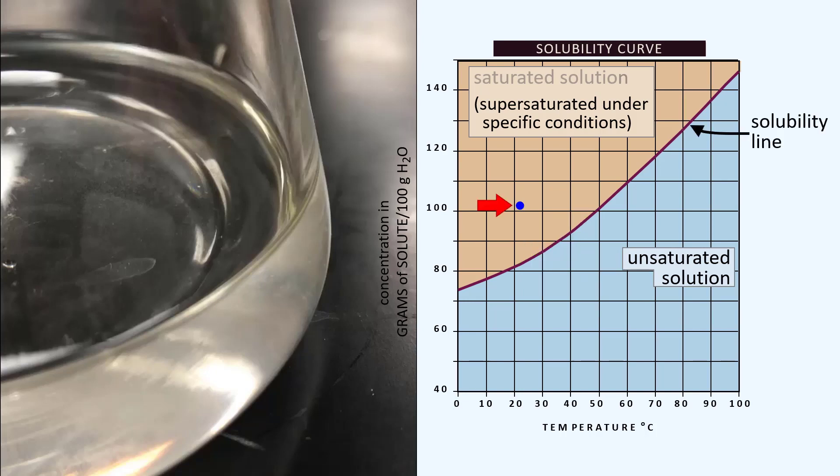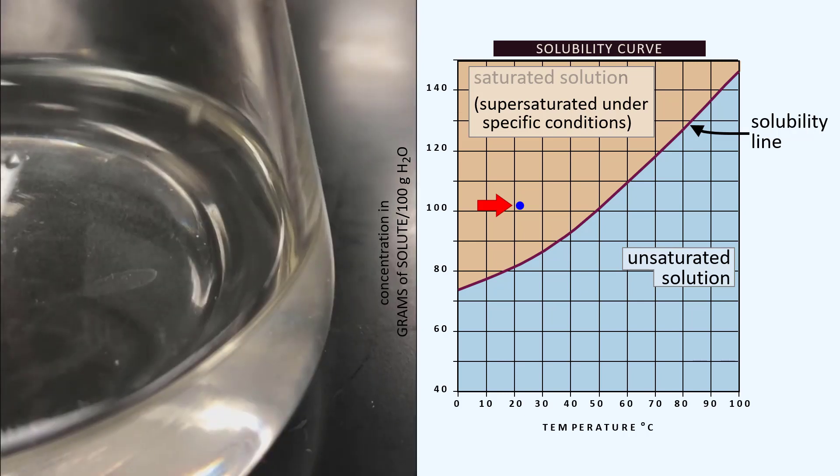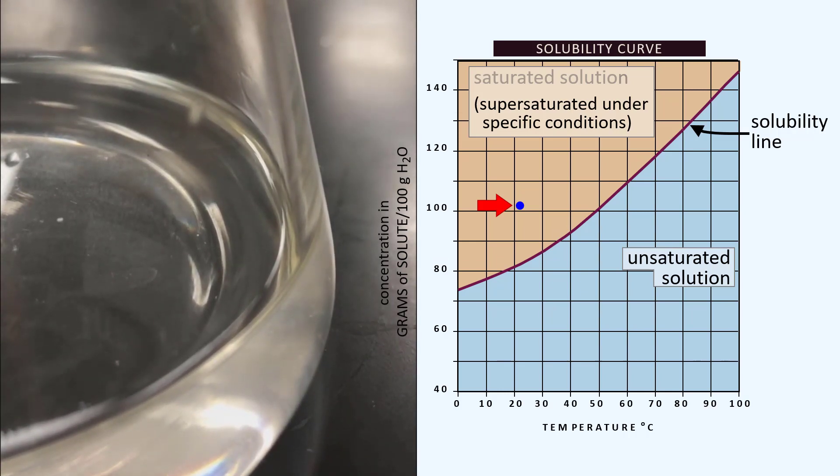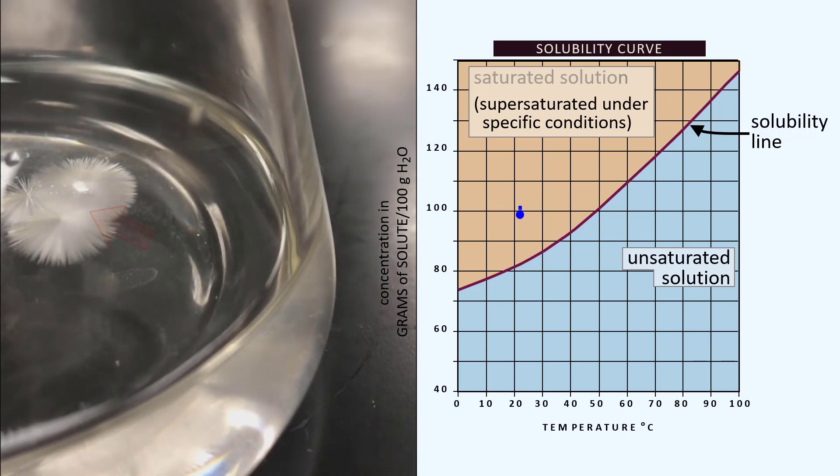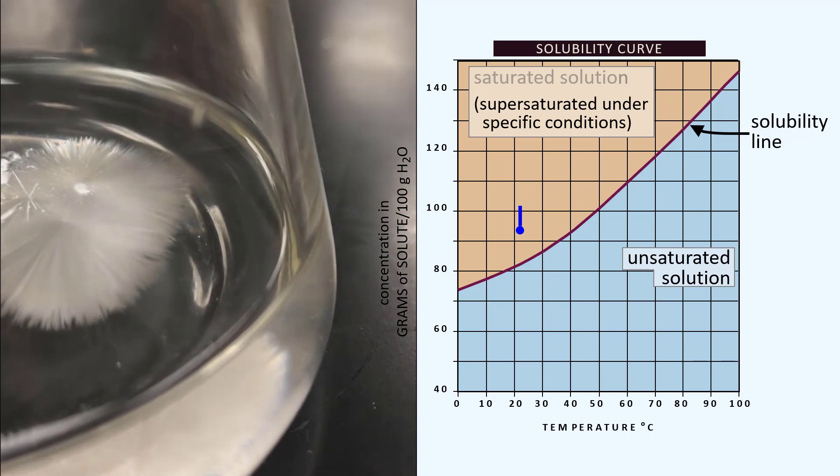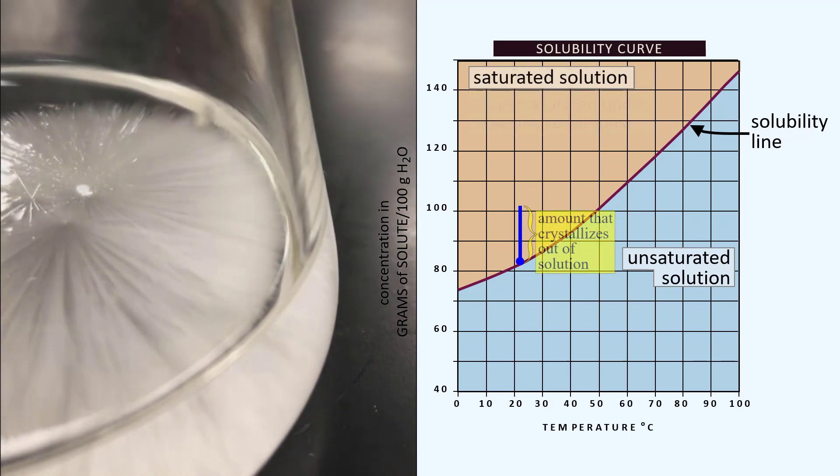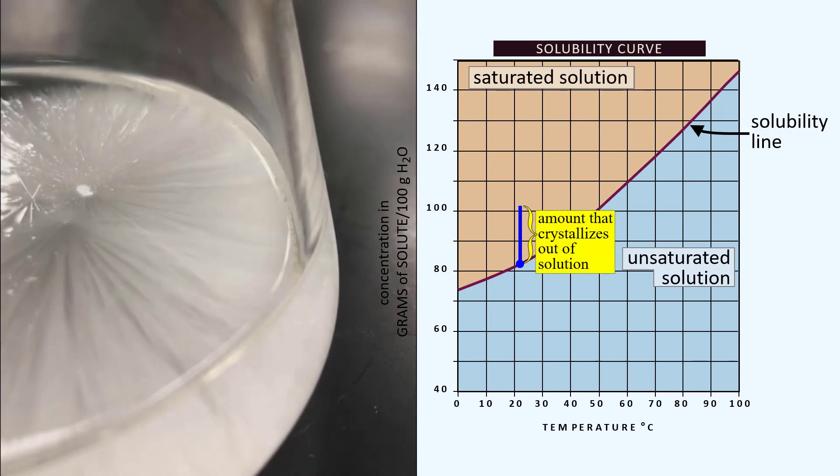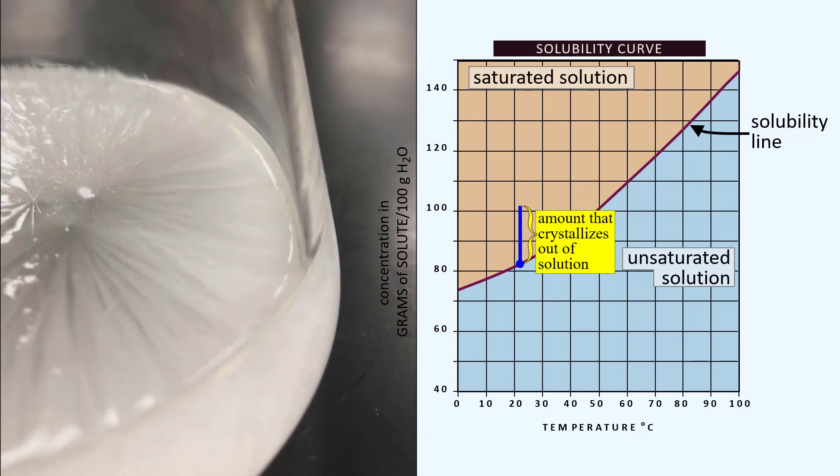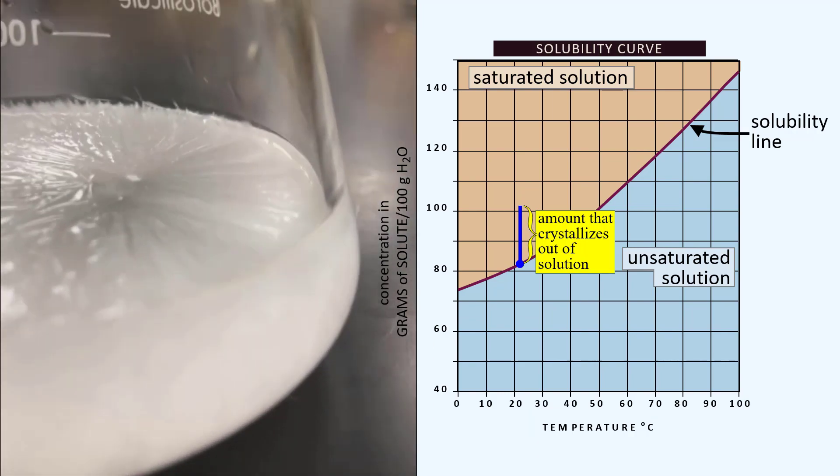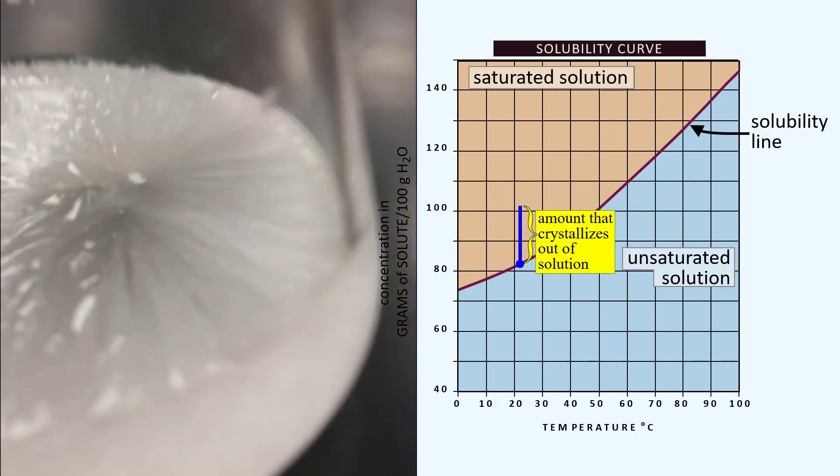We're going to drop in a couple of seed crystals—tiny crystals that provide a little face for those particles above solubility to grab onto and start to form a solid. As you can see, those particles on the graph are coming out of solution and becoming a solid. The graph tells us how much is actually crystallized out of solution.